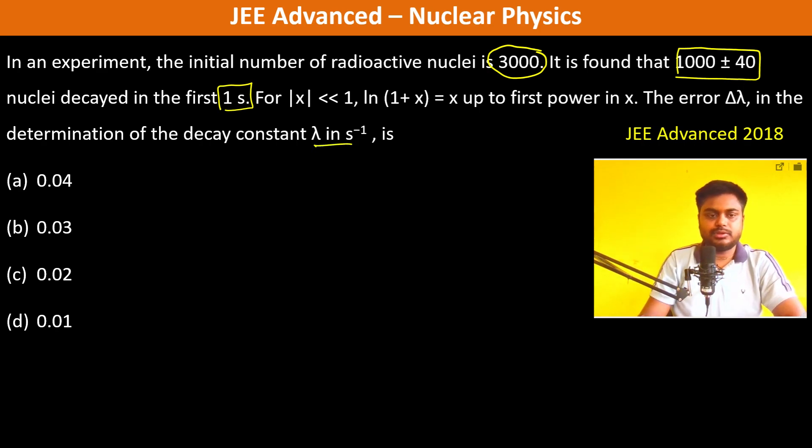We have N = N₀e^(-λt). Taking ln on both sides: ln(N) = ln(N₀) - λt. Now we differentiate